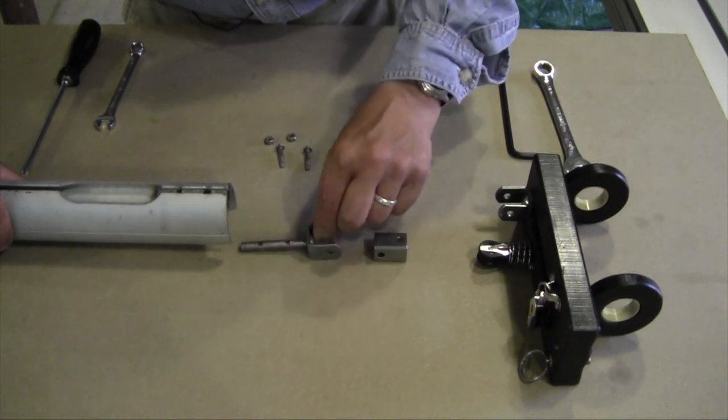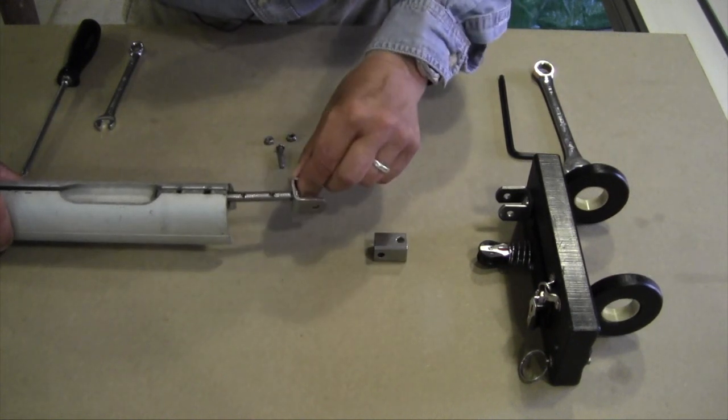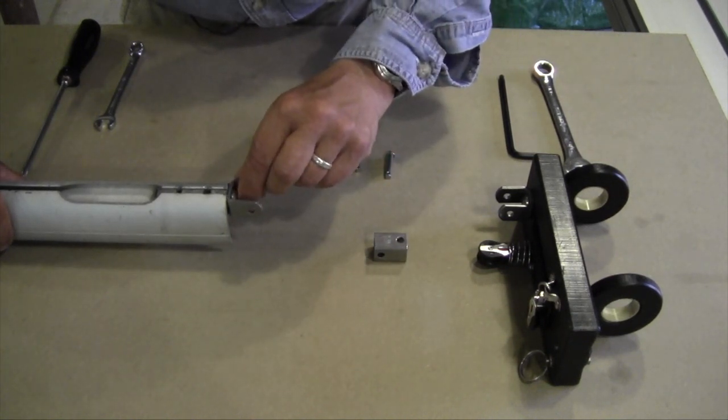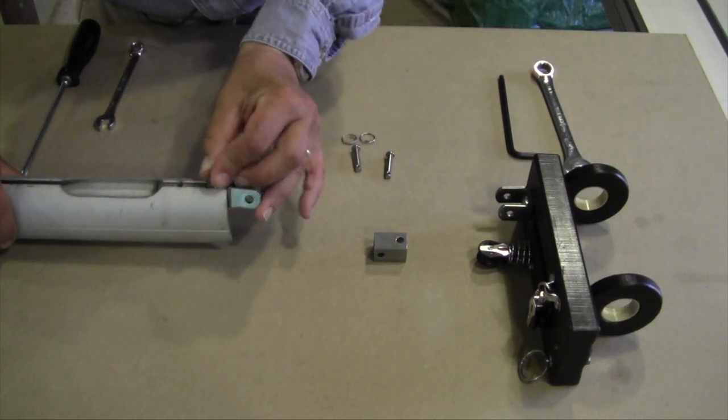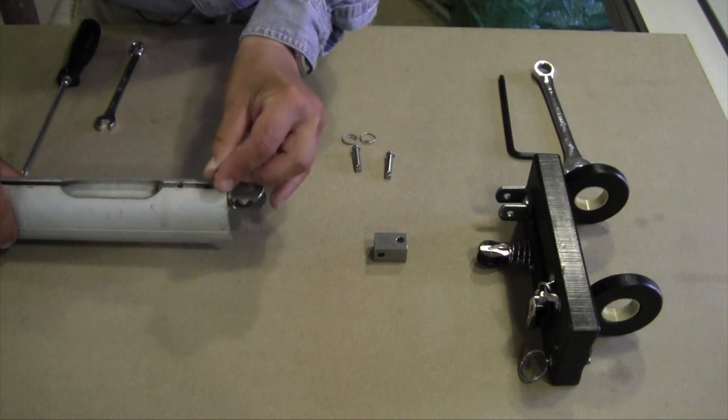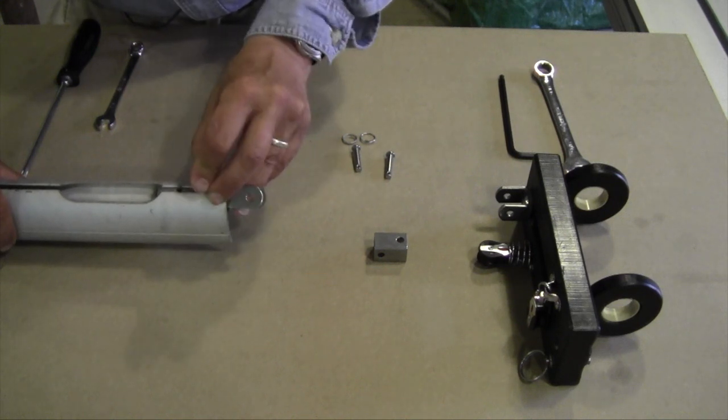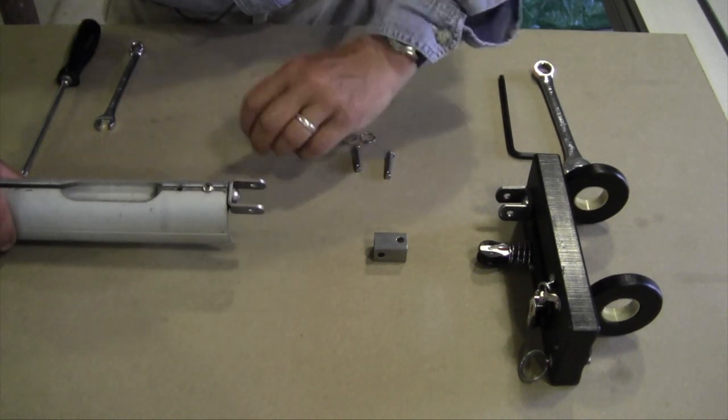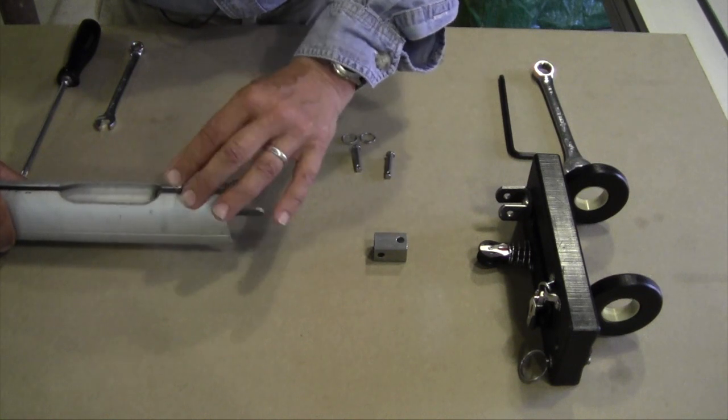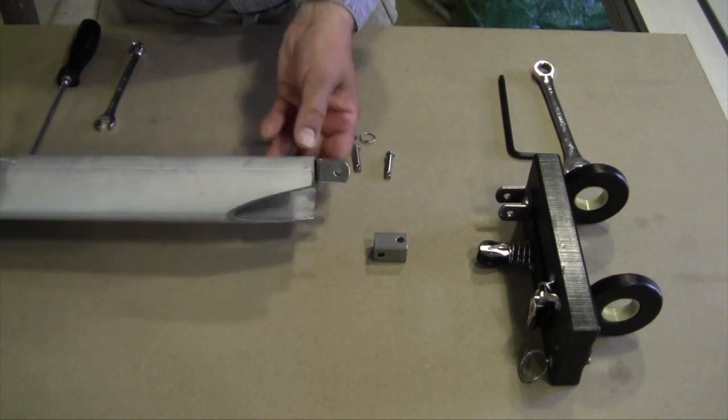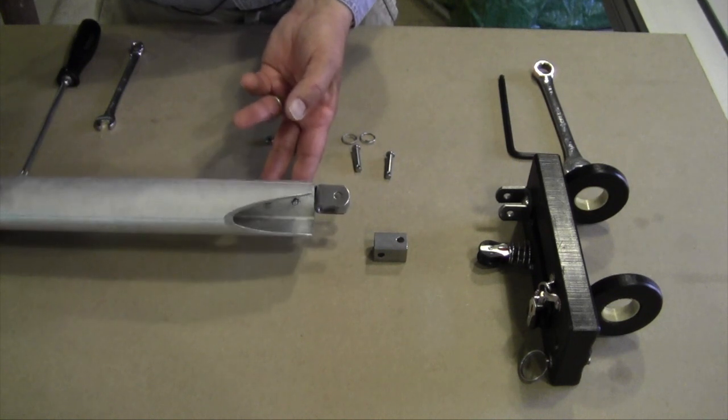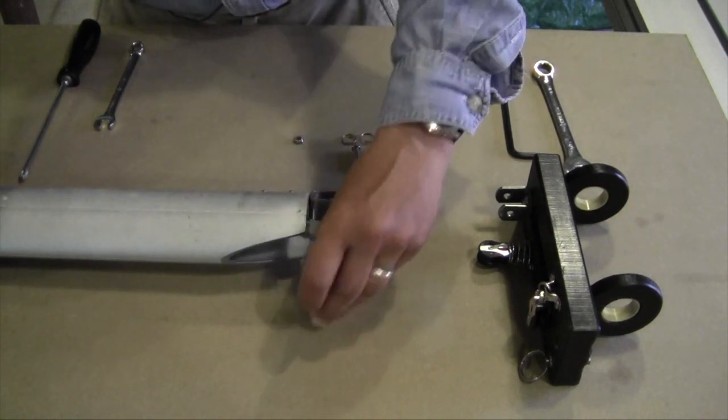And so making this attachment is simply a matter of sliding that in, and if I can do this one-handed, there we go. Putting our keeper bolts into the holes provided, and those come through to the back side, and we'll put the nuts on there.